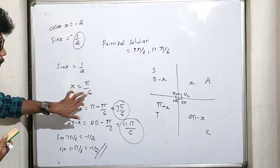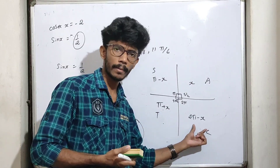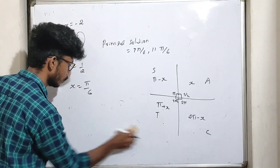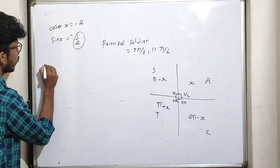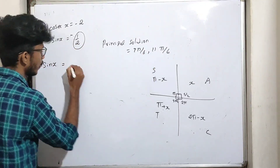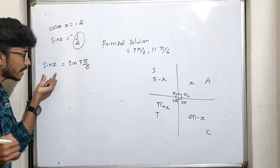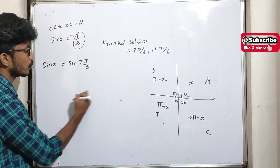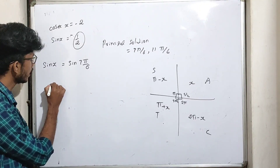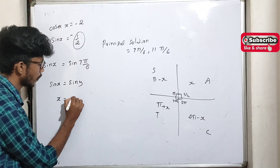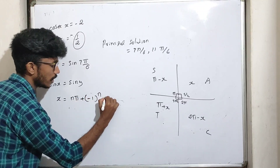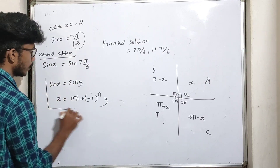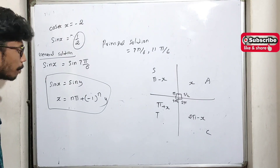Okay, let's take a general solution. For sin x equal to minus 1 by 2, the general solution formula is: sin x equals sin y implies x equals nπ ± (−1)^n · y. This is the general solution formula.